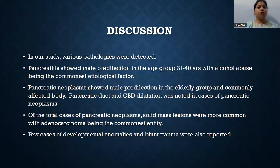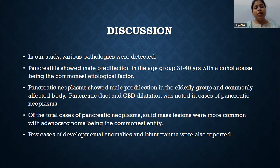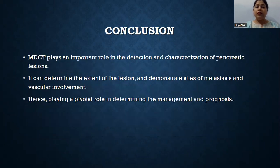In our study, various pathologies were detected. Pancreatitis showed male predilection in the age group 31 to 40 years, with alcohol abuse being the common etiological factor. Pancreatic neoplasm showed male predilection in the elderly group and commonly affected the body. Pancreatic duct and CBD dilatation were noted in cases of pancreatic neoplasm. Of the total cases, solid mass lesions were more common with adenocarcinoma being the commonest entity. Few cases of developmental anomalies and blunt trauma were also reported. Hence, multi-detector CT plays an important role in the detection and characterization of pancreatic lesions, can determine the extent of lesion, demonstrate the site of metastasis and vascular involvement, playing a pivotal role in determining management and prognosis.